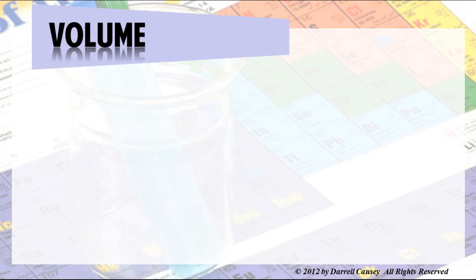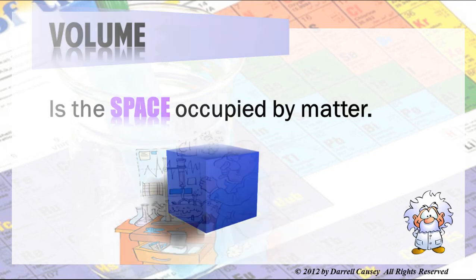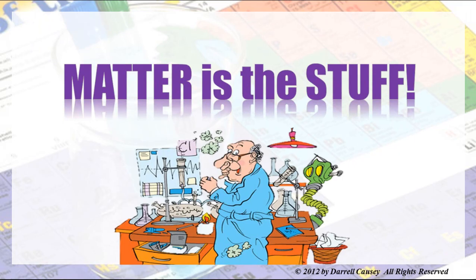Volume is the space occupied by matter, and all matter occupies a certain amount of space. Matter is just the stuff — all the stuff around us. The universe starts with two whole ideas: it's either mass or it's energy. So let's talk about the divisions of matter.